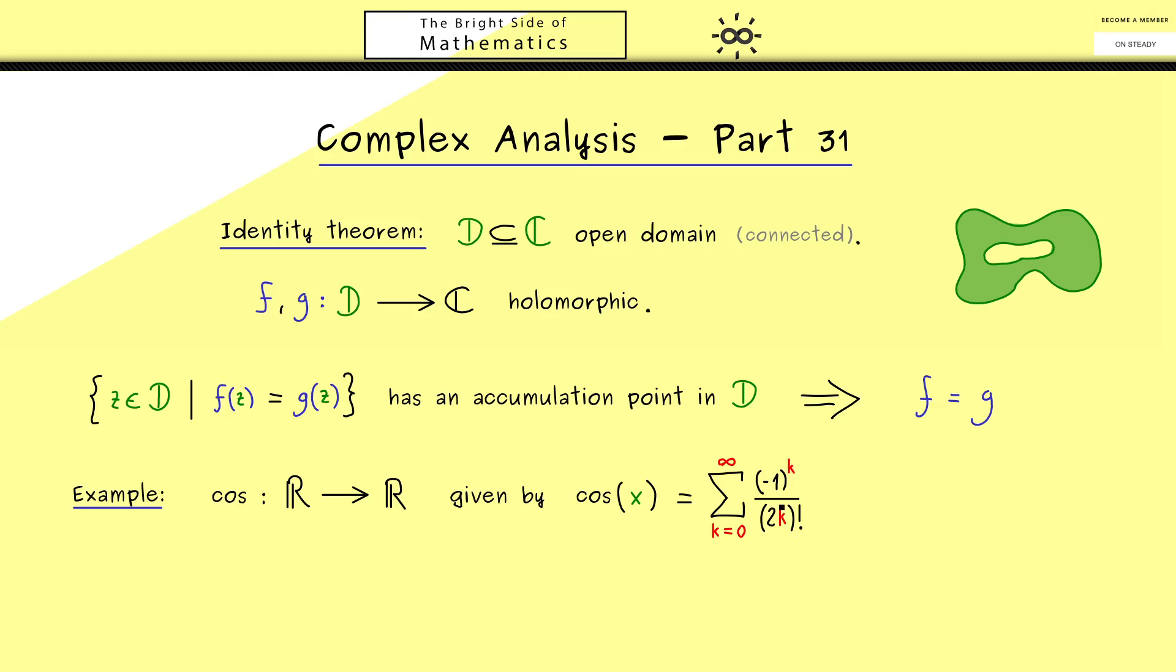The coefficient here is given by minus 1 to the power k divided by 2k factorial. It's important to remember that we only have the even powers of x. With this we get a well-defined C infinity function on R.